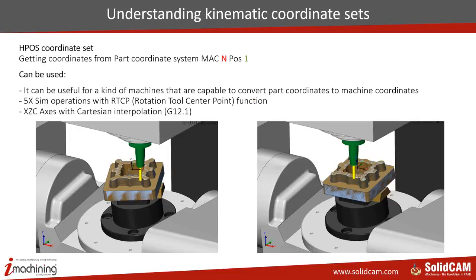First is the H-Pose set — one of the easiest to understand. It's basically the coordinates generated directly from your MAC position, but it's very important that it's always from position one. No matter what kind of toolpaths you have on your part, the H-Pose will always come directly from the coordinates themselves. This H-Pose coordinate set can be used for machines that are capable of converting part coordinates to machine coordinates. You can always and only use it for five-axis simultaneous operations — it's not usable for indexical movements.